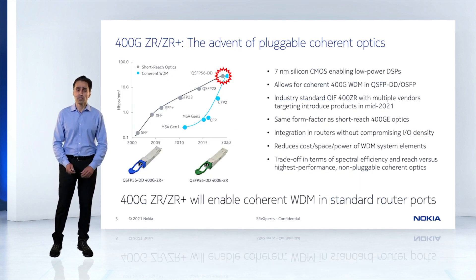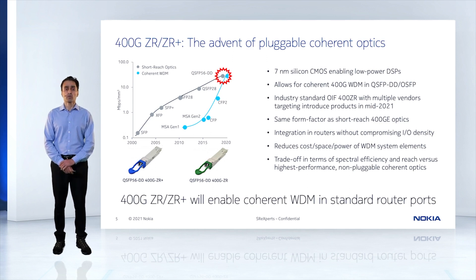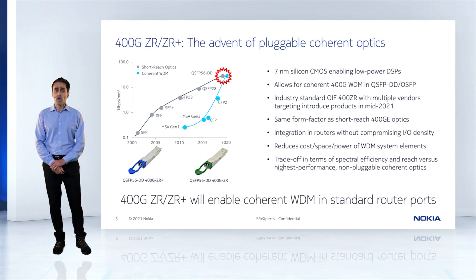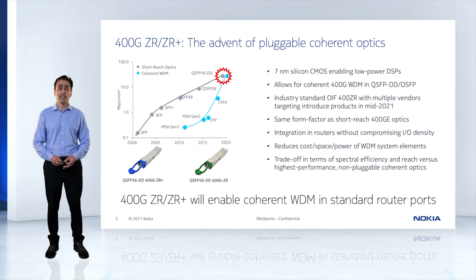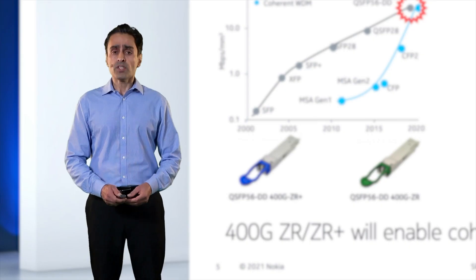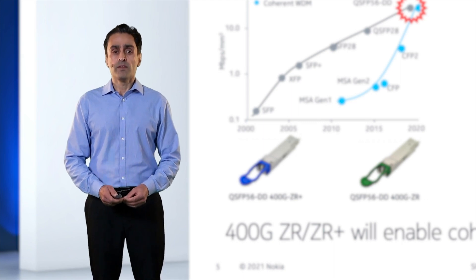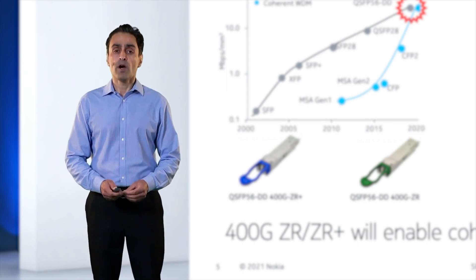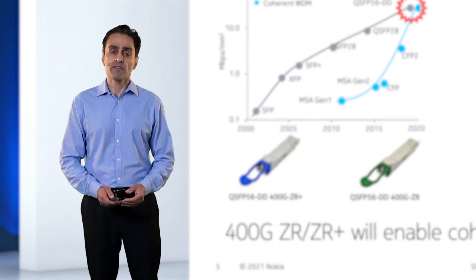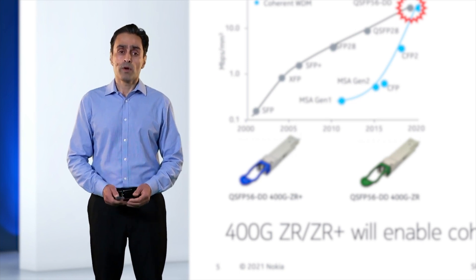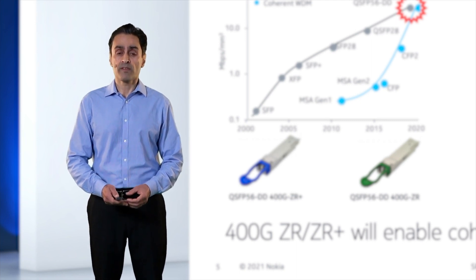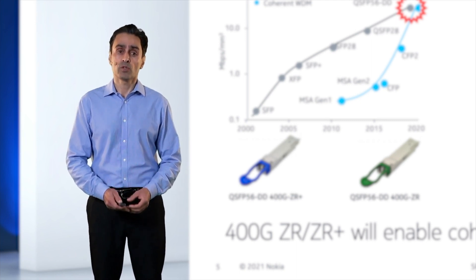So what has changed? Vendors are always trying to put more capacity in the same form factor, which is the SFP. They started with 1G SFP, then it went to 10G, 100G, and now 400G. With the introduction of the QSFP-DD, 400G short reach and coherent DWDM can be offered in the same form factor. Previously, DWDM optics were board-mounted, or if pluggable, they would consume more real estate than regular short-reach optics.